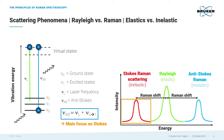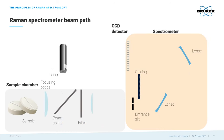Now that we know how Raman scattering works, we will have a quick look at how a Raman spectrometer works. Here we see the setup of a typical Raman spectrometer. The laser creates a laser beam which is directed at a beam splitter. The light is then projected onto the sample through focusing optics. After passing a filter and another focusing optics, the beam is directed into the spectrometer and onto a lens and subsequently onto a grating.